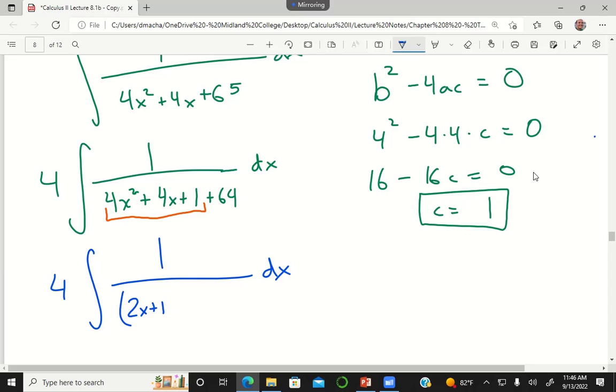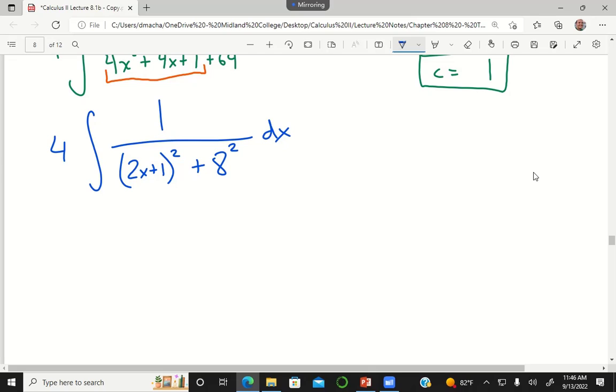It's going to be 2x plus 1 squared, right? You can always guess and then check. 2x squared is 4x squared, 1 squared is 1, and then you get 4x. 64 is 8 squared.